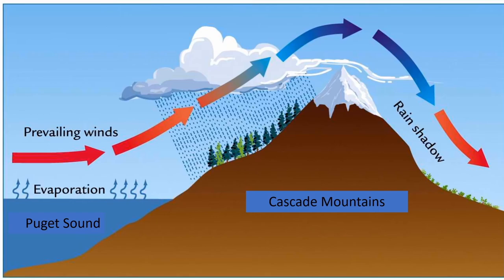Water vapor is evaporating up out of Puget Sound on a warm day. The prevailing winds moving east from the Pacific Ocean push this mass of moist air higher and higher against the mountains. The air temperature is much colder at higher elevations, which causes the water molecules to condense and fall as snow. The wind keeps going right over the Cascades, but it has already lost all its moisture.